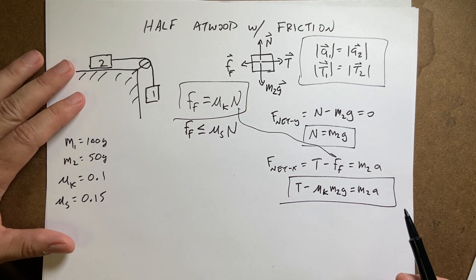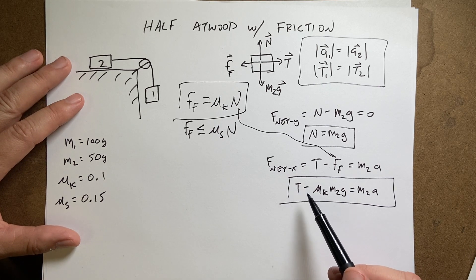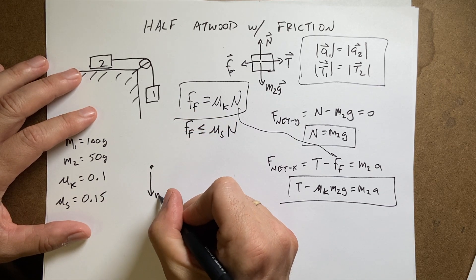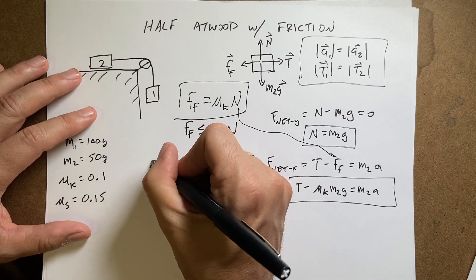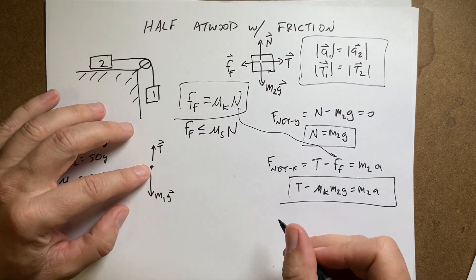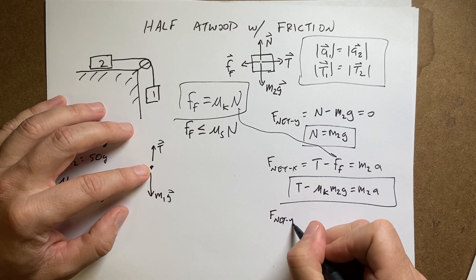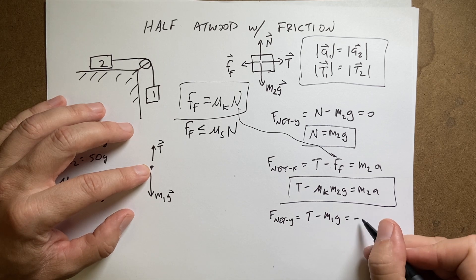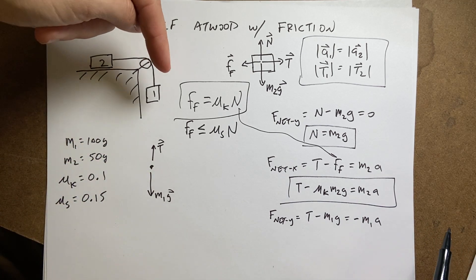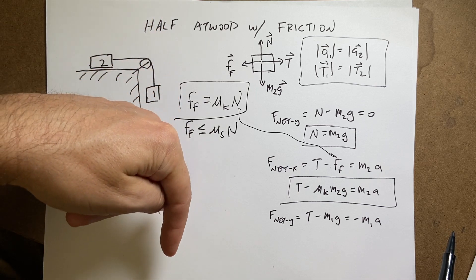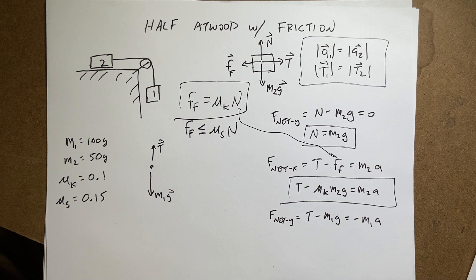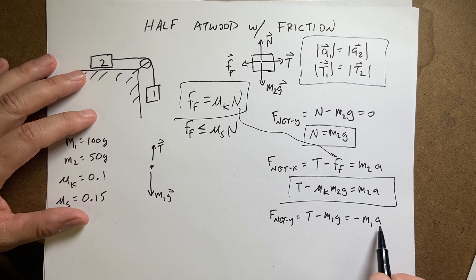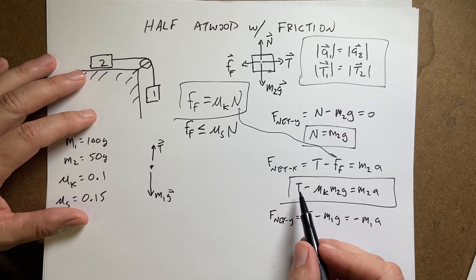There's two things I don't know in this equation: T and A. So let's go over to block one. Block one has a gravitational force M1G pulling down and T pulling up. In this case F_net_Y is going to be equal to T minus M1G equals negative M1A. It's negative because I'm assuming this is accelerating downward. If I'm wrong, I'd solve for A and I'd get a negative value.